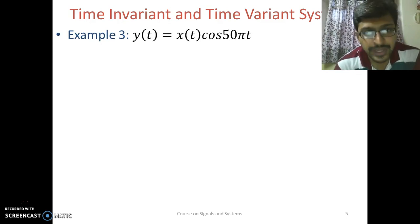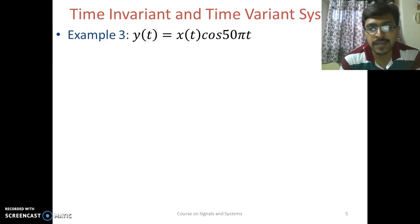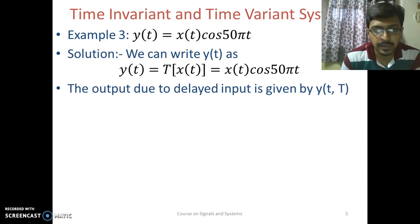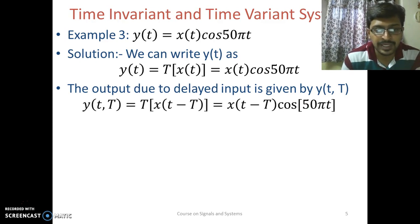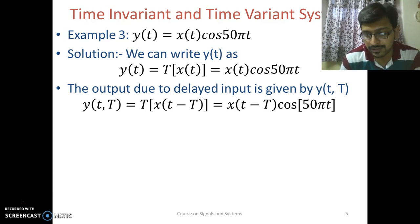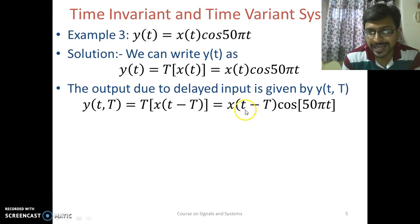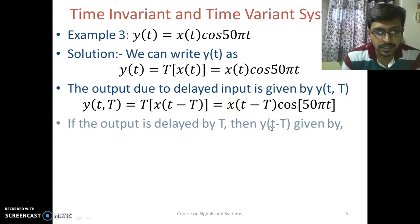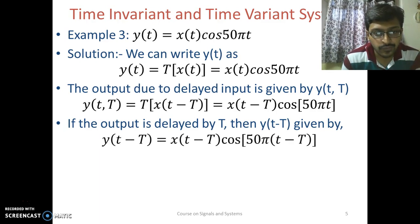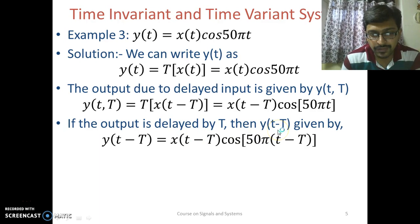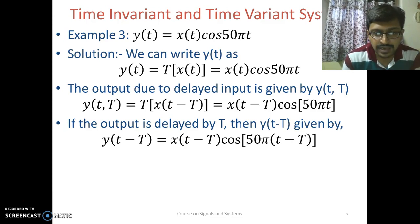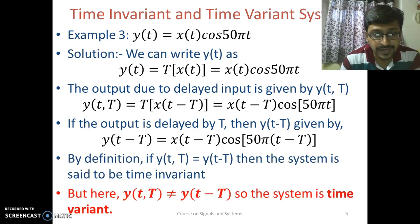Consider one more example where y(t) = x(t)·cos(50πt). We obtain the output due to delayed input: y(t, T) = x(t − T)·cos(50πt). Note that we have only delayed the input by T. Now for delaying the output we replace t by (t − T), giving y(t − T) = x(t − T)·cos(50π(t − T)). We can see that y(t, T) is not equal to y(t − T), so the system is time variant.